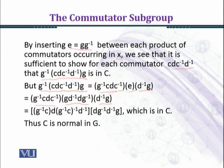When we multiply g with the identity element we shall get g, and g times g^-1 is also an identity element. We have made this substitution to write g^-1cdg^-1c^-1.